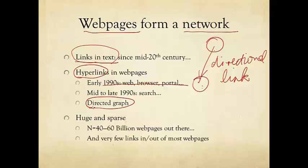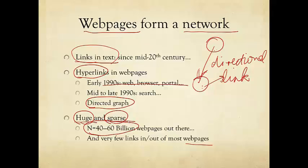The resulting graph is called a directed graph. How big is this graph? It is very big. Nobody knows for sure, but it is estimated that N, the number of web pages out there, is somewhere between 40 to 60 billion. At the same time, this graph is also very sparse, meaning that there aren't that many links compared to the number of nodes. Many of these web pages have very few links pointing in or links pointing out. So we're talking about a huge and sparse graph — a very special kind of graph.